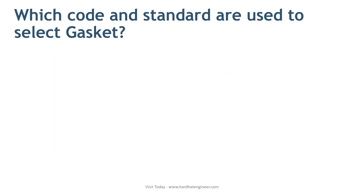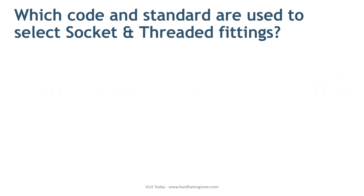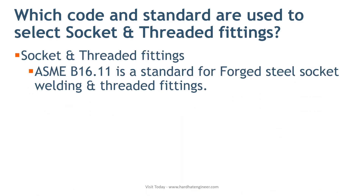Next is gaskets. ASME B16.20 is the standard for metallic gaskets for pipe flanges, and ASME B16.21 is the standard for non-metallic gaskets. For socket and threaded fittings, ASME B16.11 is the standard for forged steel socket welding and threaded fittings.